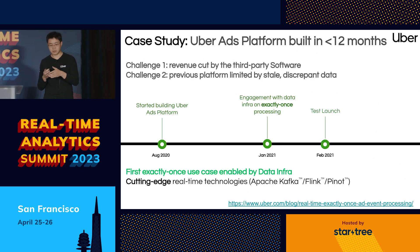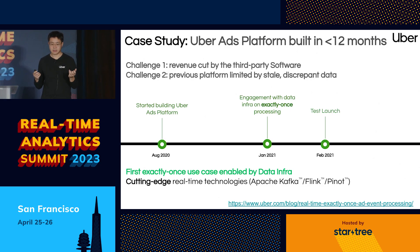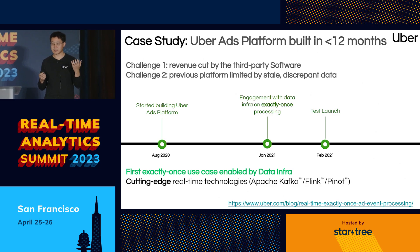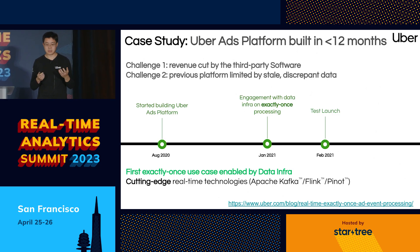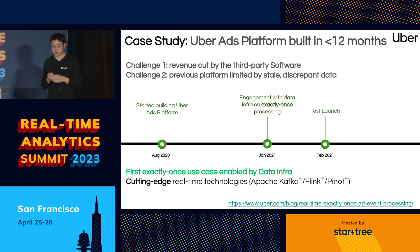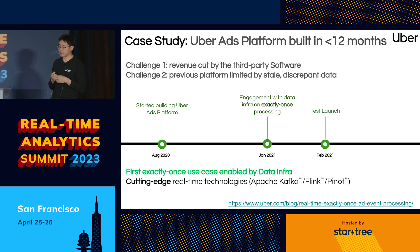The ads platform started in August 2020, and within a year they were able to build this end-to-end solution providing exactly-once semantics processing. Exactly-once is important because a lot of this ad data is used for bidding — we want to charge advertisers accurately, without duplicates causing overcharges or data loss causing undercharges. We achieved this by combining exactly-once processing in Flink, transactions in Kafka, and upsert in Pinot.